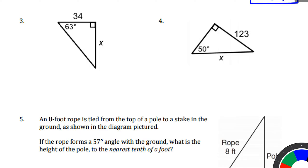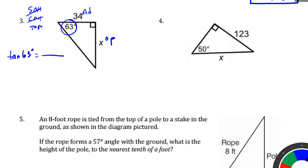For number three, here's the angle, the opposite side, and the adjacent side. Notice the hypotenuse is not given. Looking at SOHCAHTOA, the only function that does not use the hypotenuse is tangent. So we're going to use tangent of 63 degrees, which equals the opposite side over the adjacent side. Cross-multiplying and solving gives us x equals 34 times tangent of 63. Plug that into the calculator.